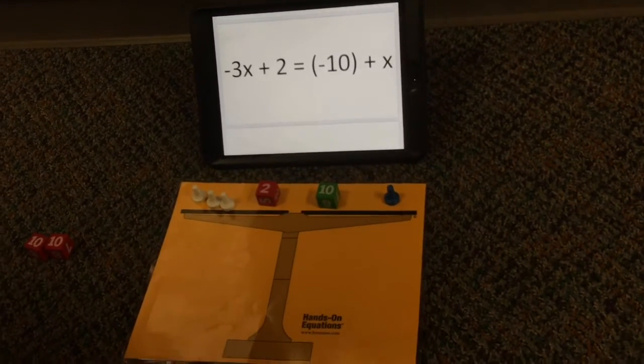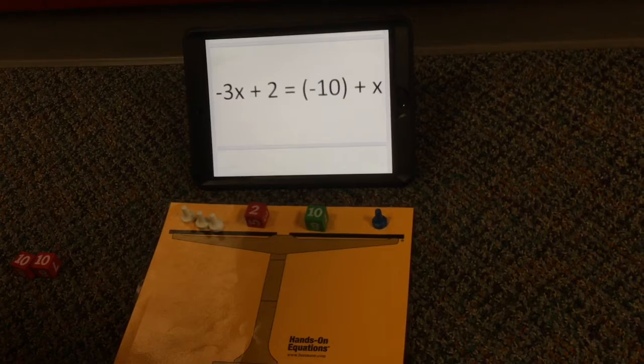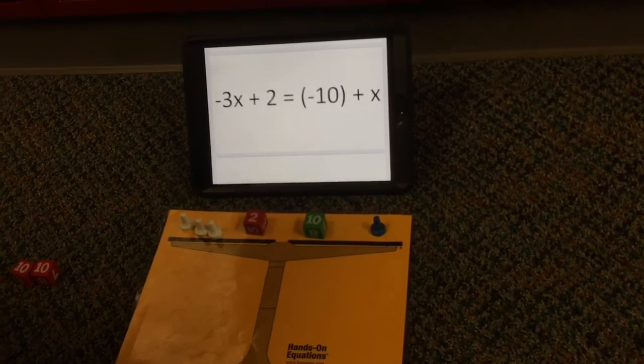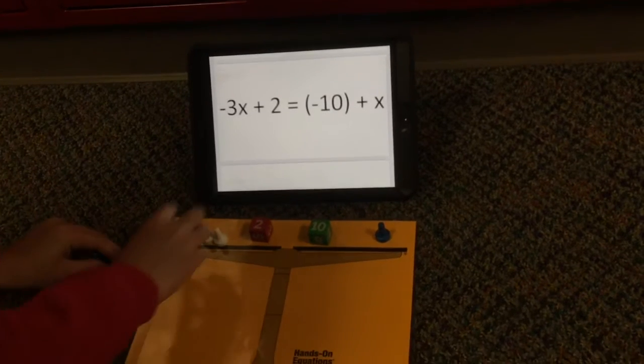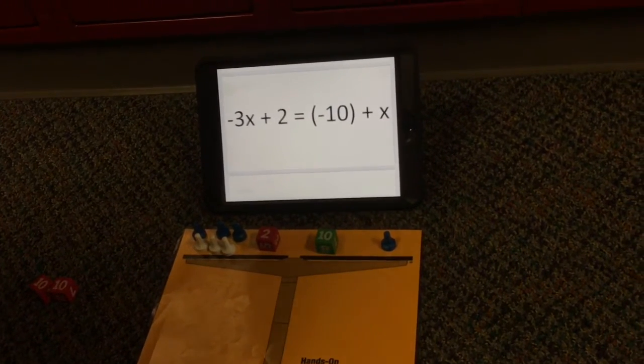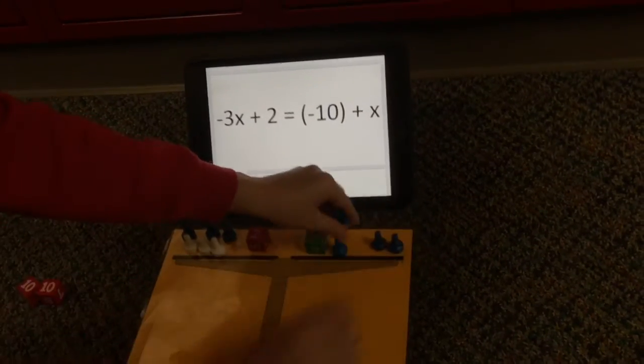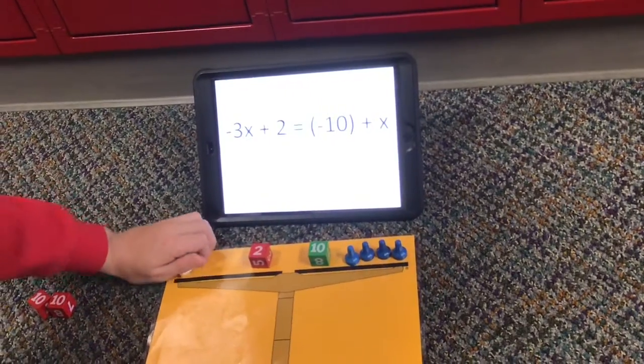For my second problem I have the opposite of 3x plus 2 equals negative 10 plus x. So first we need to add things to each side so we can make a pair of zero and get rid of the opposite of 3x. But we have to do the same thing to each side to make it fair. And so now this is a pair of zero so we can take that away.